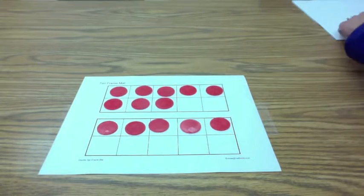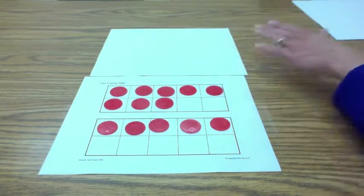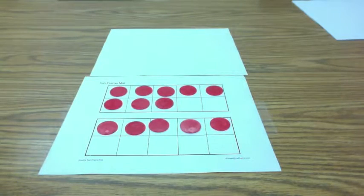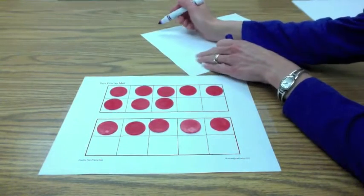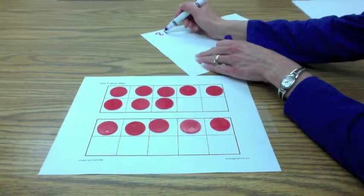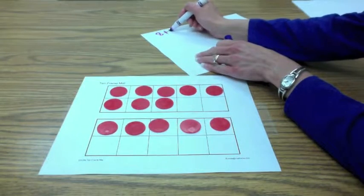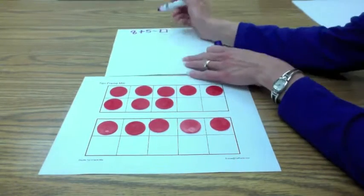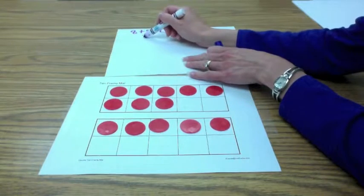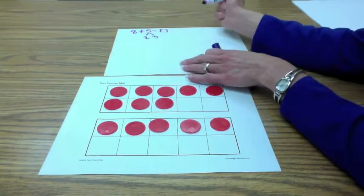And if we were going to ask students to record this, it could be something like this. We have the number model 8 plus 5, and you said you broke apart the 5 into a 2 and a 3.